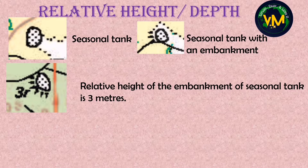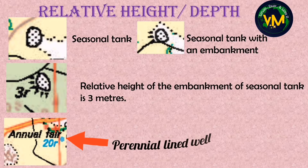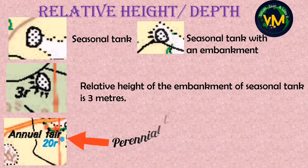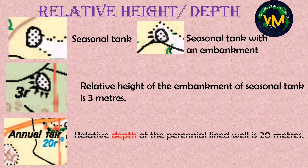Now look at the last picture. 20R is written in blue color, and this feature is present near a blue color dot which indicates a perennial lined well. Since 20R is blue, you have to write relative depth. The answer is: relative depth of the perennial lined well is 20 meters.